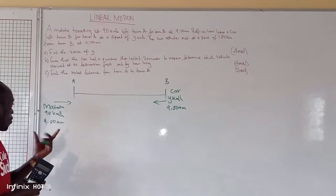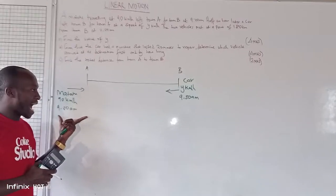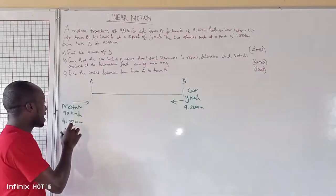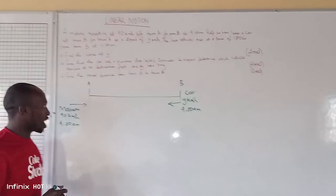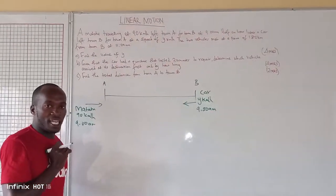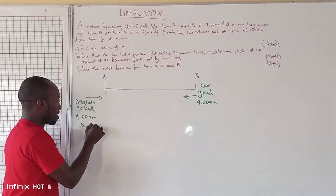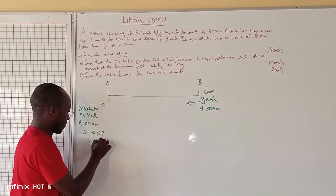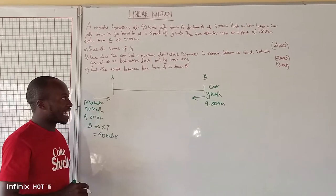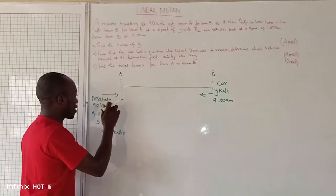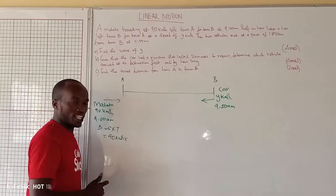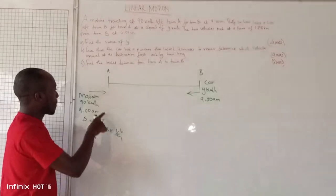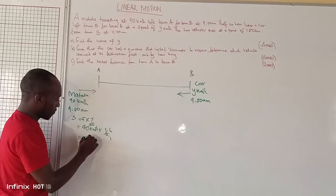When one vehicle has left earlier than the other, the first thing we should do is calculate the distance traveled by the matatu before the car started its journey — which is 30 minutes. Distance equals speed times time: 90 km/h multiplied by half an hour equals 45 km. So the distance covered by the matatu before the car started the journey is 45 km.